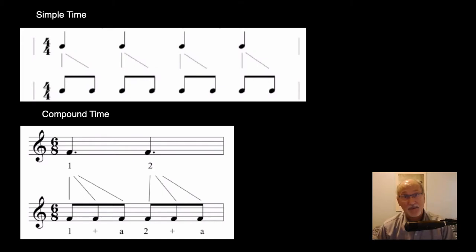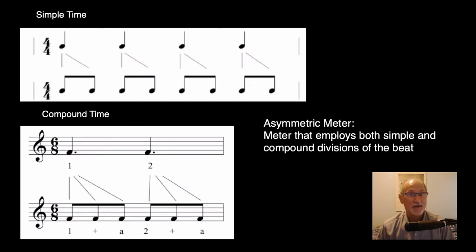But interestingly, some music employs both simple and compound divisions in the same meter. And we refer to this as asymmetric meter, in other words, sort of uneven meter. This results in a kind of metric pulsation that is not even, with some beats seeming to be longer than others.